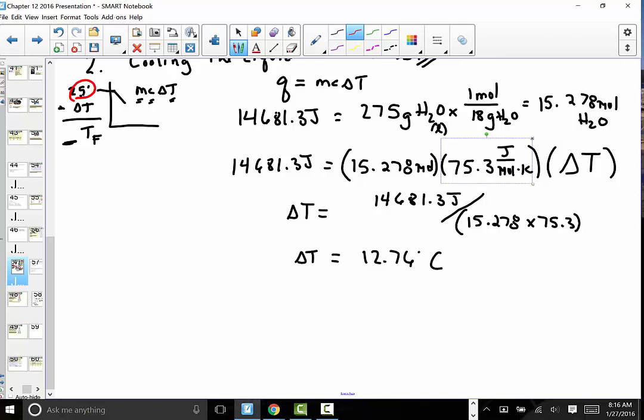So remember where we started. It started at 25°C. And if it cooled by 12.76°, I'm going to say 25 minus that answer. And the final temperature of that system is 12.24°C. So it started at 25, and it's going to land at 12.24. That energy was used to melt the ice cubes.